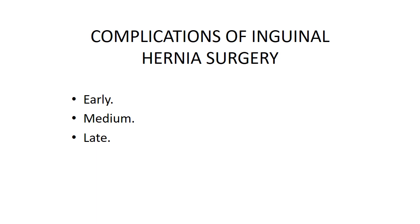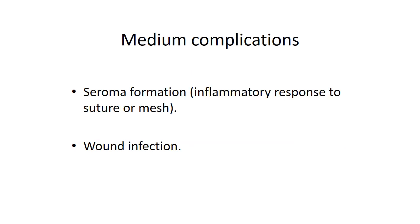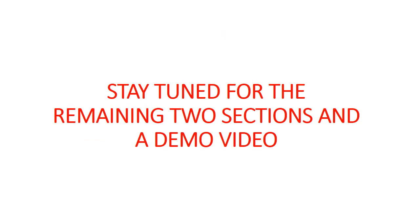For painful irreducible inguinal hernia, which may progress to strangulation and possible bowel infarction, open surgery is preferred. Complications of inguinal hernia surgery: early — bleeding, damage to inferior epigastric or iliac vessels, urinary retention, femoral nerve blockade by over-enthusiastic infusion of local anesthetic; medium — seroma formation, inflammatory response to suture or mesh, wound infection; late — hernia recurrence, chronic pain (pain present three months after surgery). Careful identification and protection of all three nerves passing along the inguinal canal reduces the incidence of neuralgic pain. Testicular infarction due to testicular artery damage is also a recognized complication.